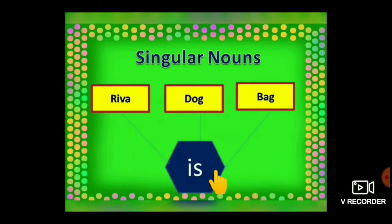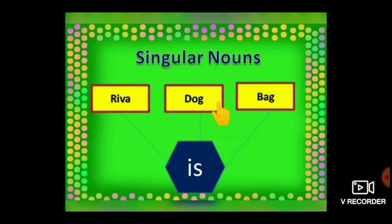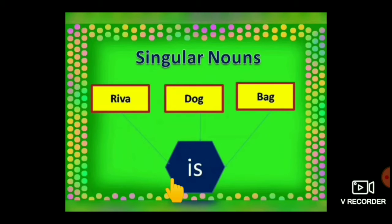Children, we use IS when the subject is a singular noun. Singular nouns like Riva, Dog, Bag. Riva is a singular person, Dog is a singular animal, and Bag is a singular thing. So we use IS with singular subjects like: Riva is, Dog is, and Bag is.